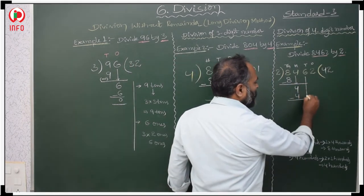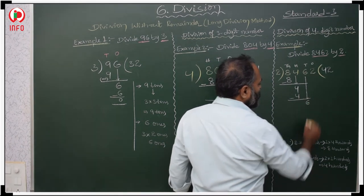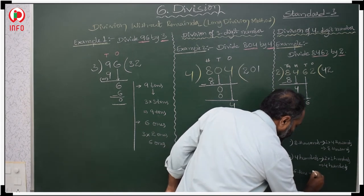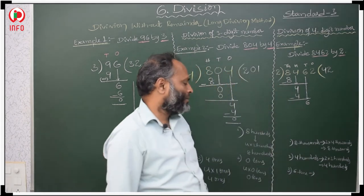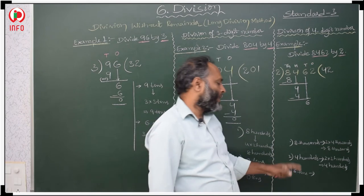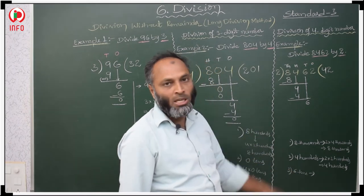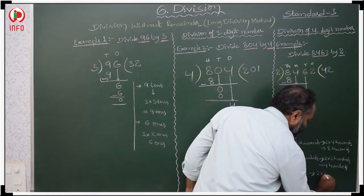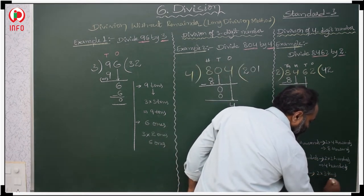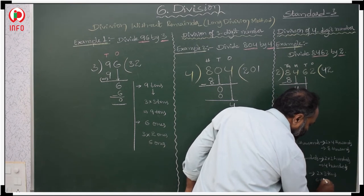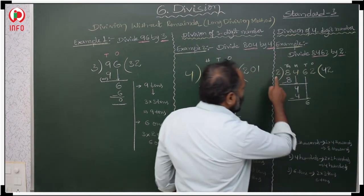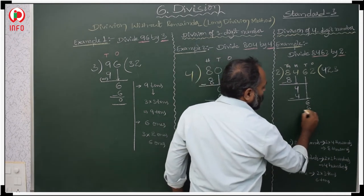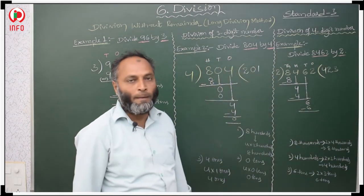Next, go for the 6 tens. In the 2 times table, when will you get 6 tens? 2 times 3 tens is 6 tens. So we write 3 in the quotient. Same number minus same number is 0.